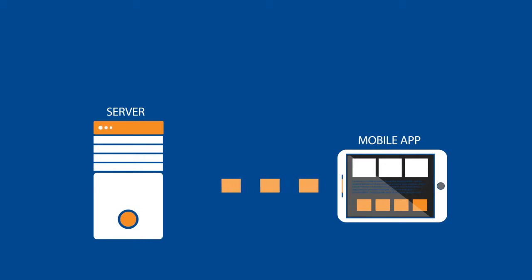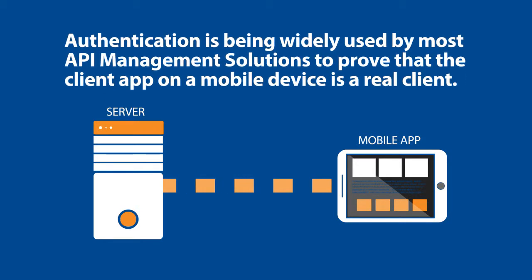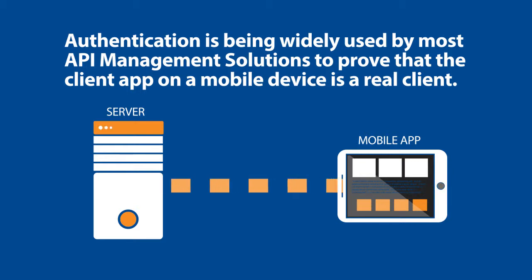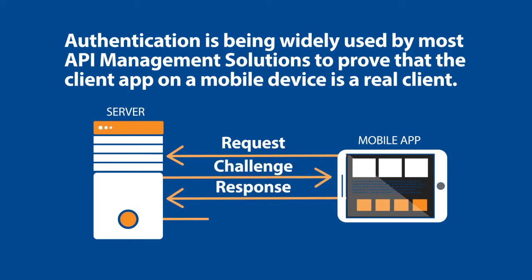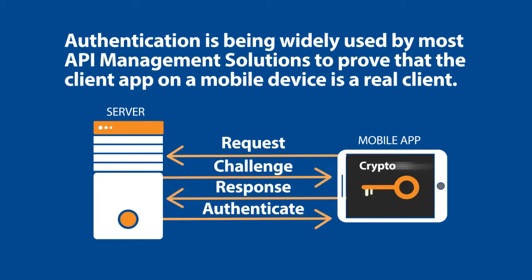Let's take an example of a mobile app using an API to access functionality that resides on a back-end server. Authentication is being widely used by most API management solutions to prove that the client app on a mobile device is a real client as it tries to connect to an API server. This is typically done using a challenge-response exchange, which is a cryptographic operation, meaning the client contains a key, generally for an asymmetric cipher like RSA or ECC.